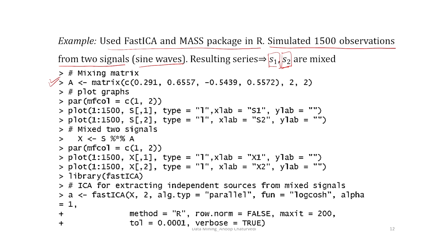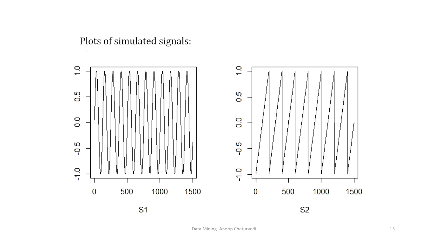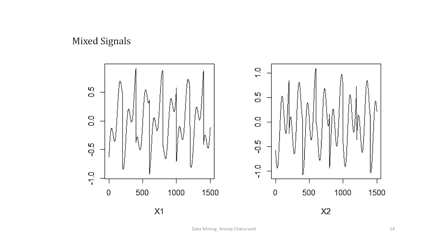We plotted the two series, applied the fast ICA package, and extracted the two signals from the mixed signals. This is the plot of the simulated signals: the first signal and the second signal. We mixed these two signals using the mixing matrix A to get mixed signals X1 and X2.